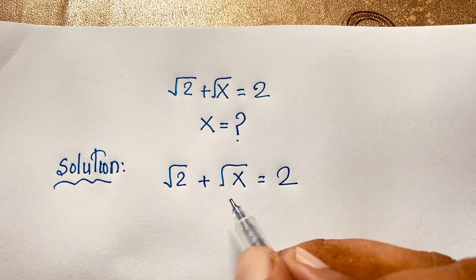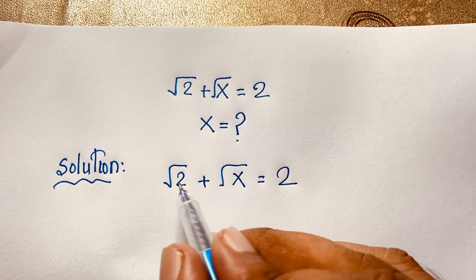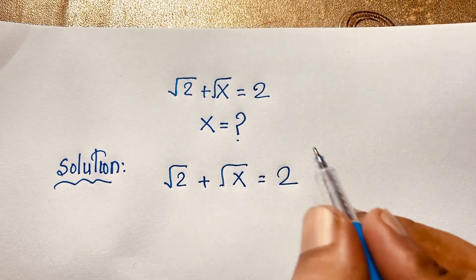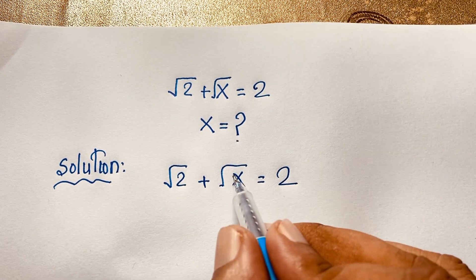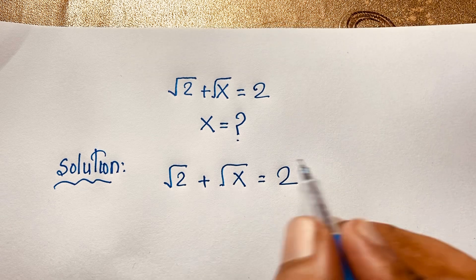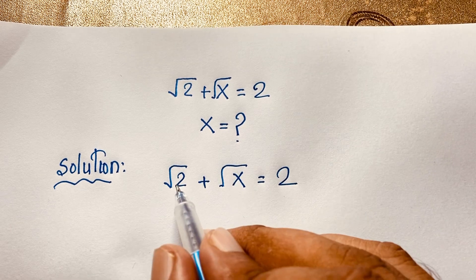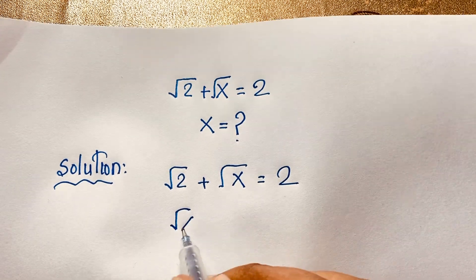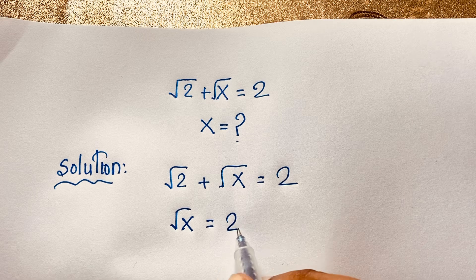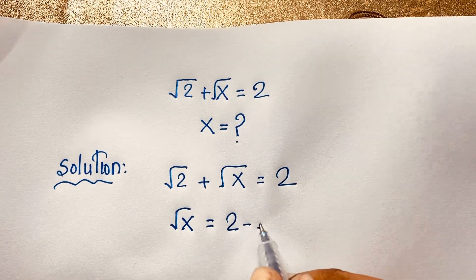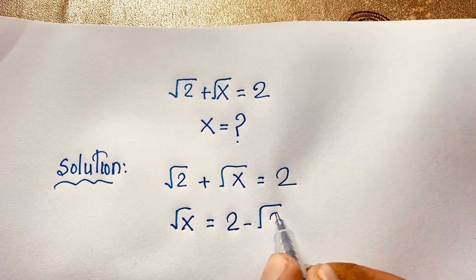Now I just move this square root 2 to the other side. You can also move square root x to this side, but I will move this one. So it will be: square root x is equal to 2 minus square root 2.